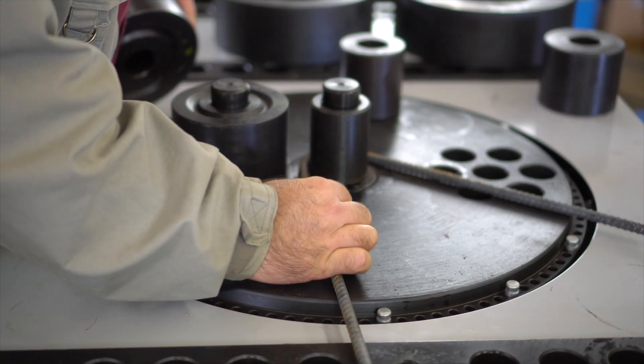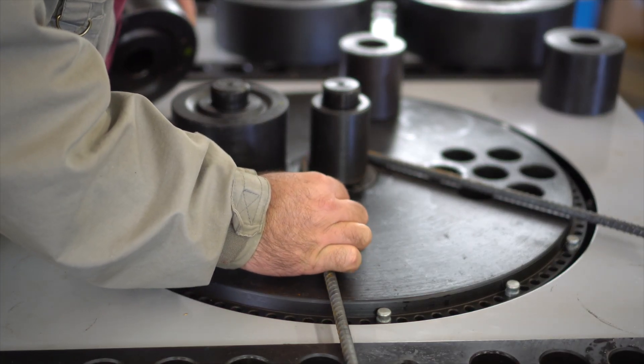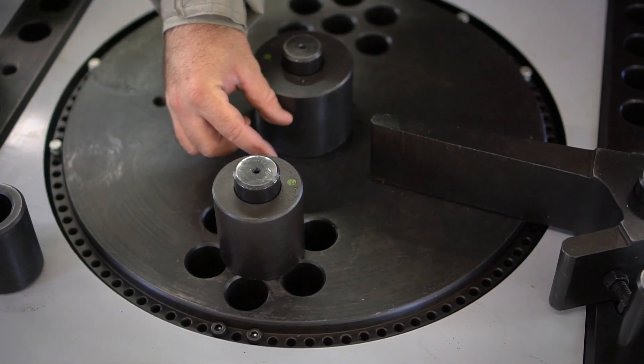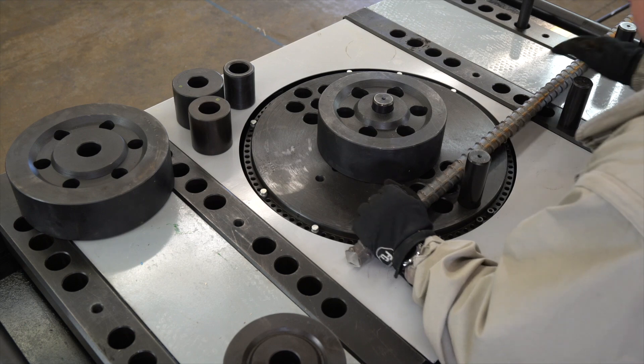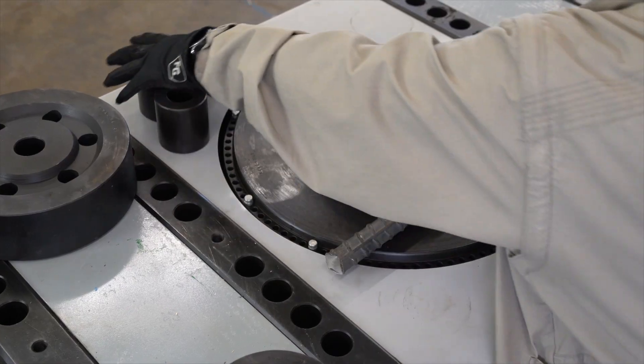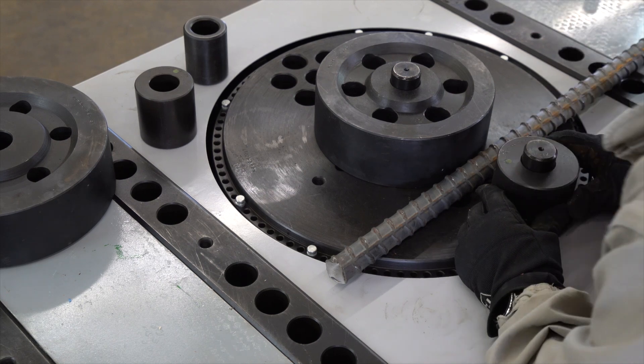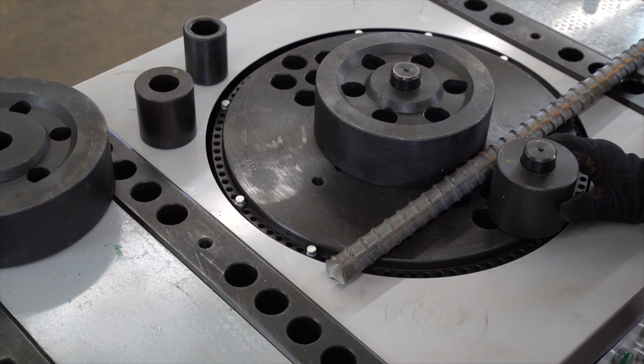When placing the rebar on the table, you want to make sure that you have this area as close to the bar as possible. So you're able to move a pin around the cluster of holes and drop a roller on top. Once that is completed, you can put the retainer in place.